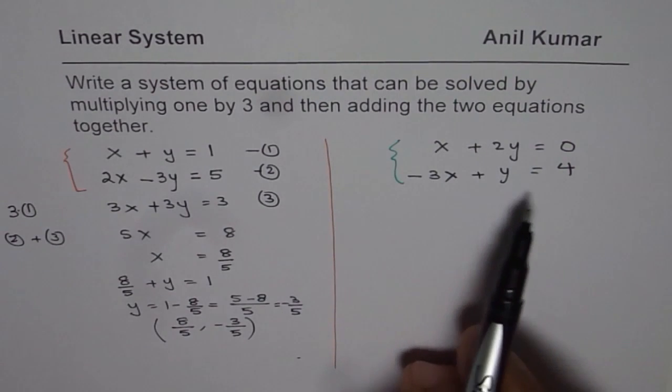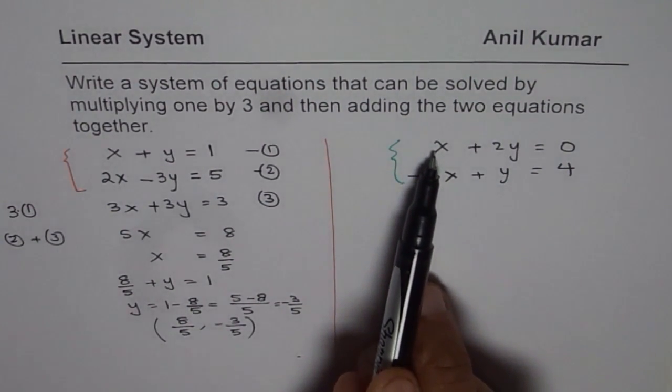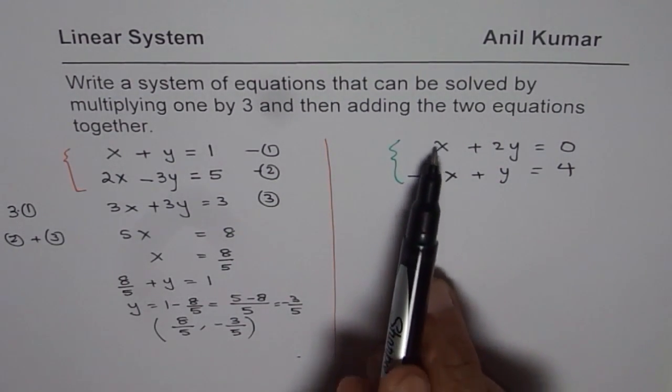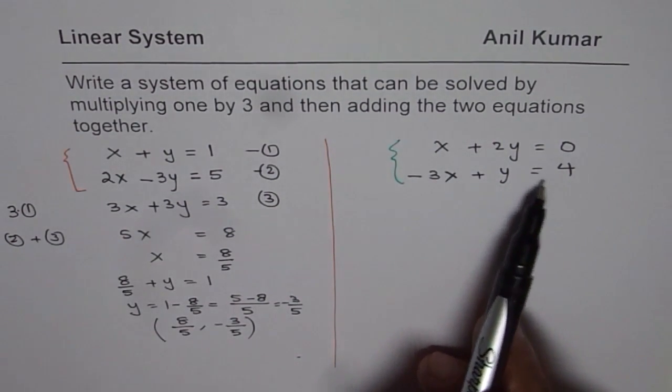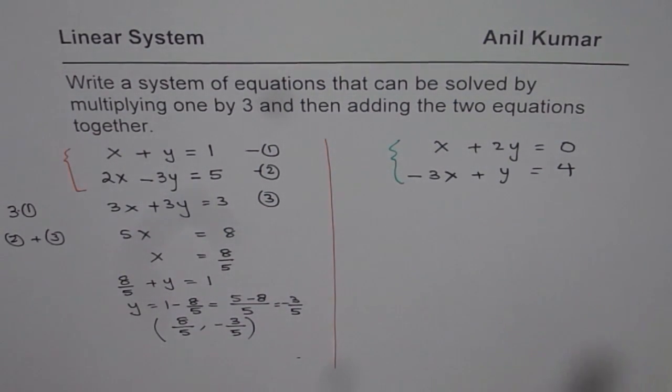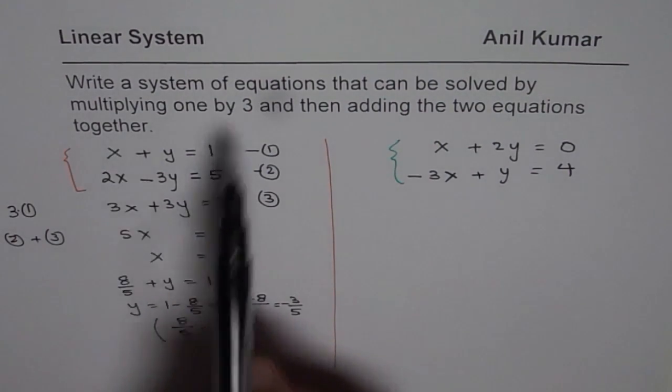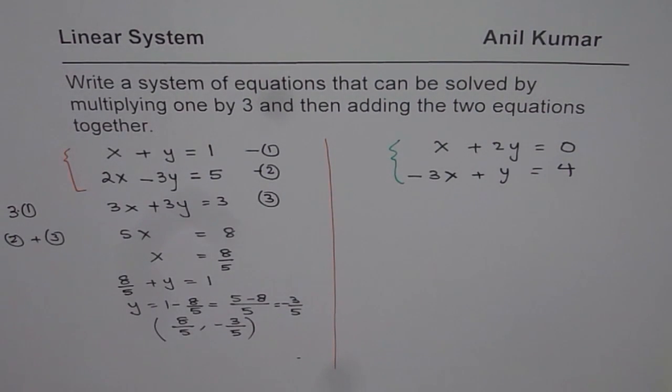So it is very clear in this particular case also, you need to multiply the first equation by 3, then add, get them cancelled off, and then solve for y, substitute y back into the equation, solve for x, and write down your answer. That is how you can create a linear system in which the particular method can be applied.